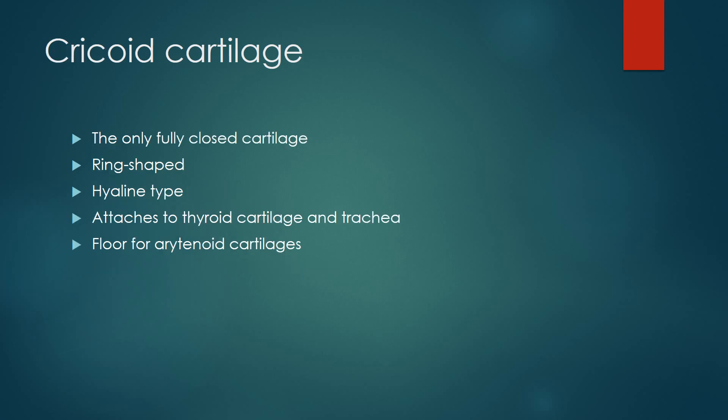The cricoid cartilage is a ring-shaped cartilage. It is the only fully closed cartilage of the laryngeal complex and is a hyaline type. It attaches to the thyroid cartilage and the trachea. It serves as a floor for the arytenoid cartilage, forming a kind of sliding window mechanism.